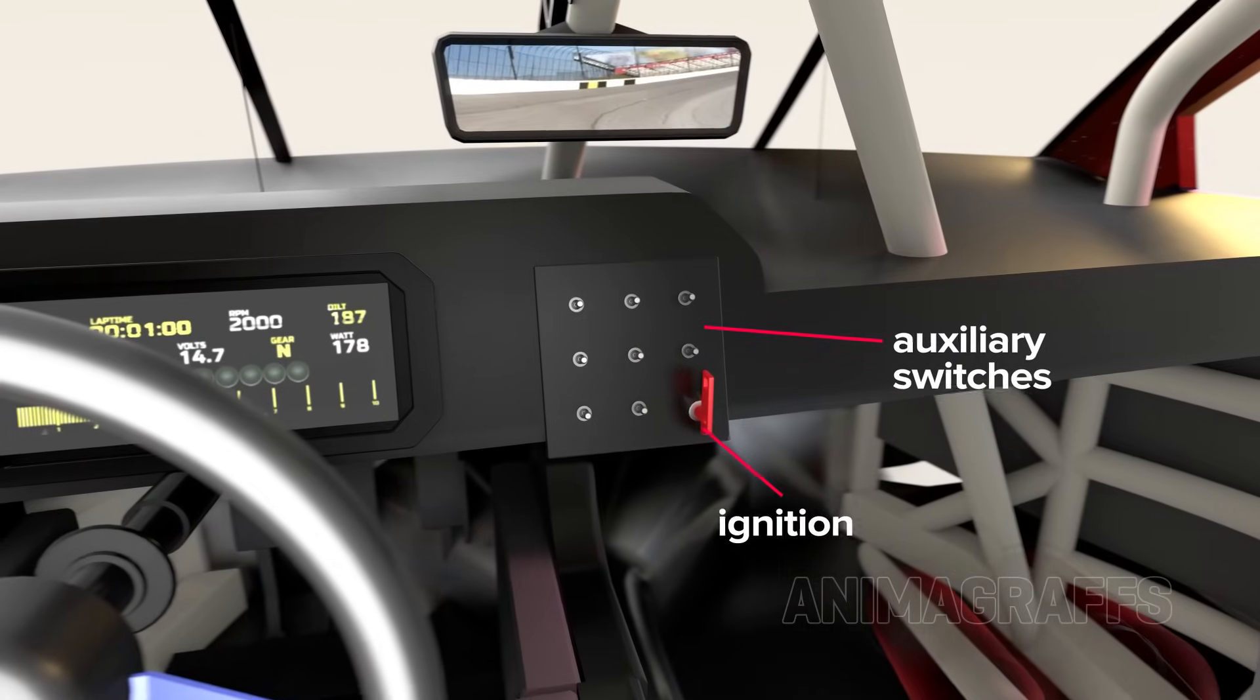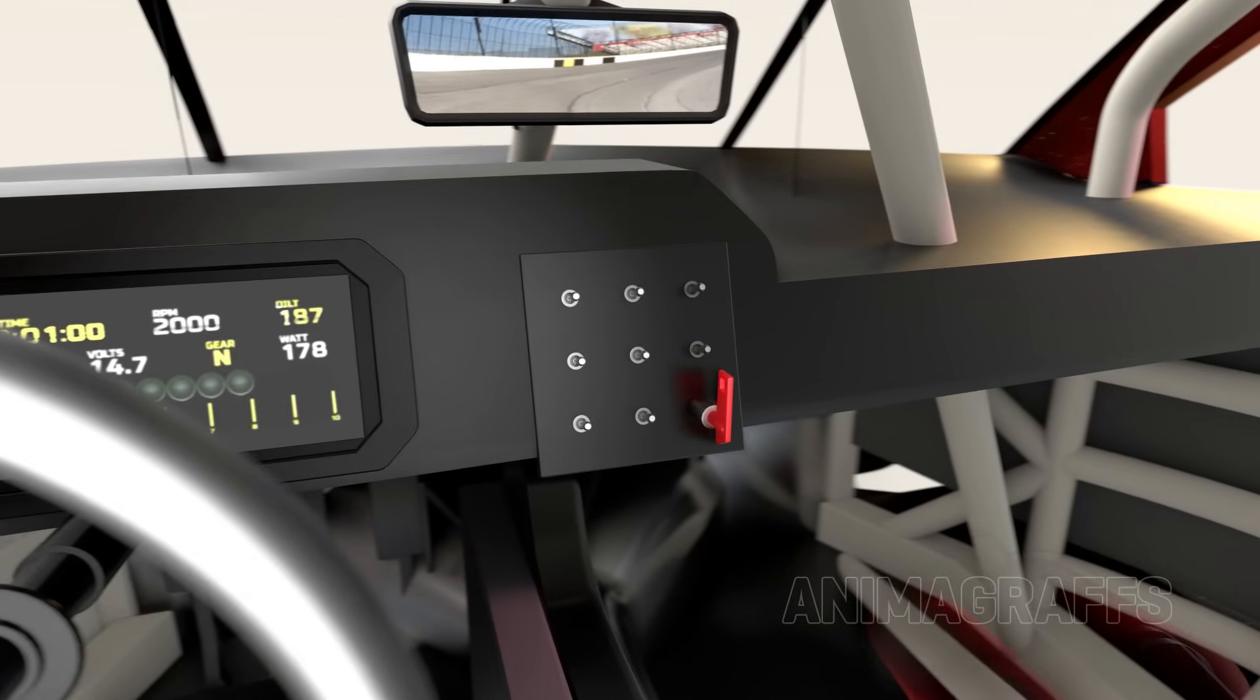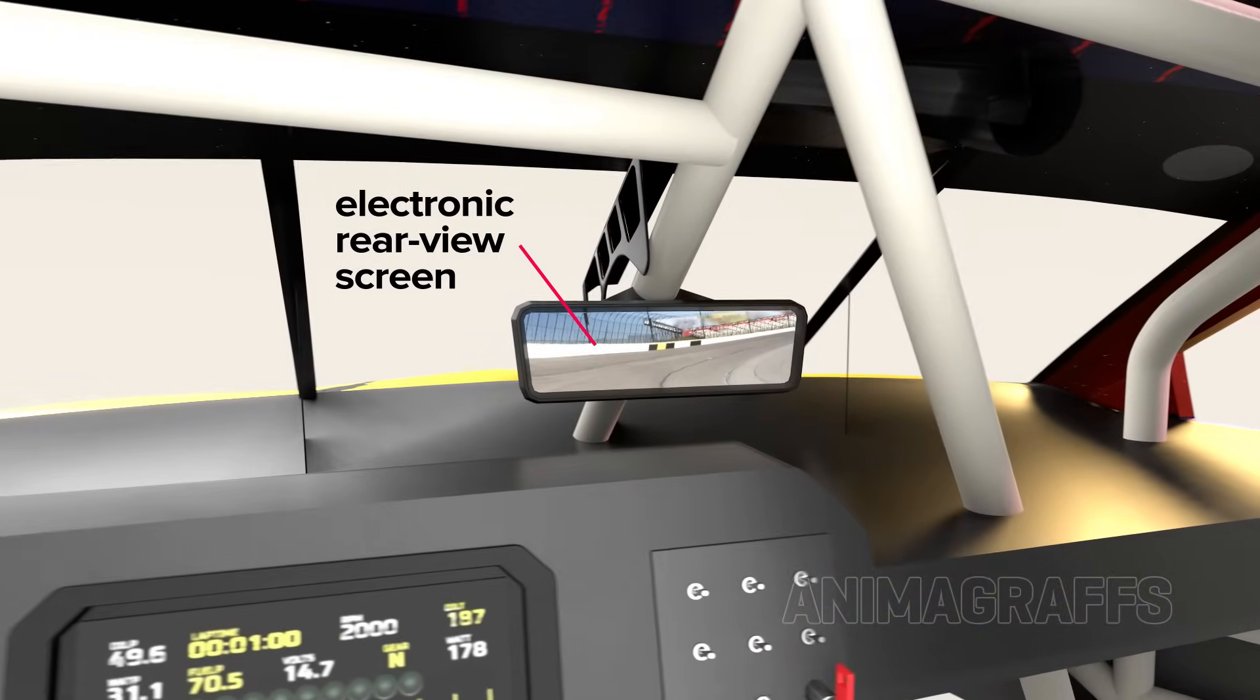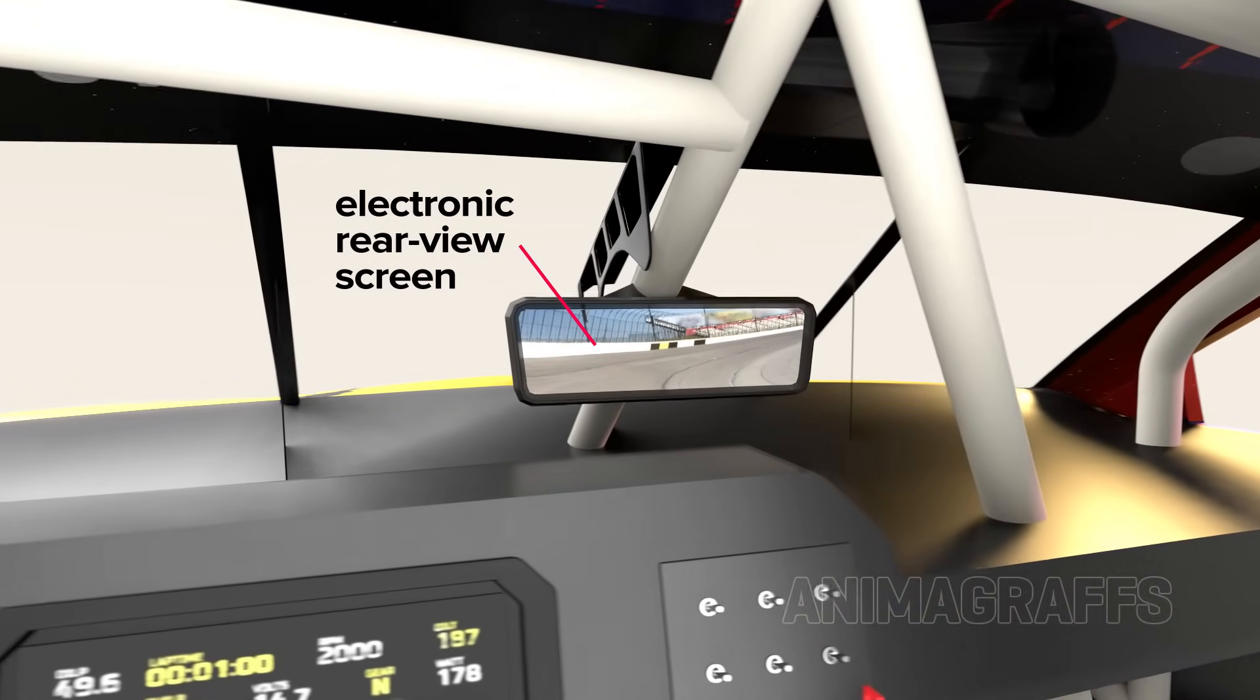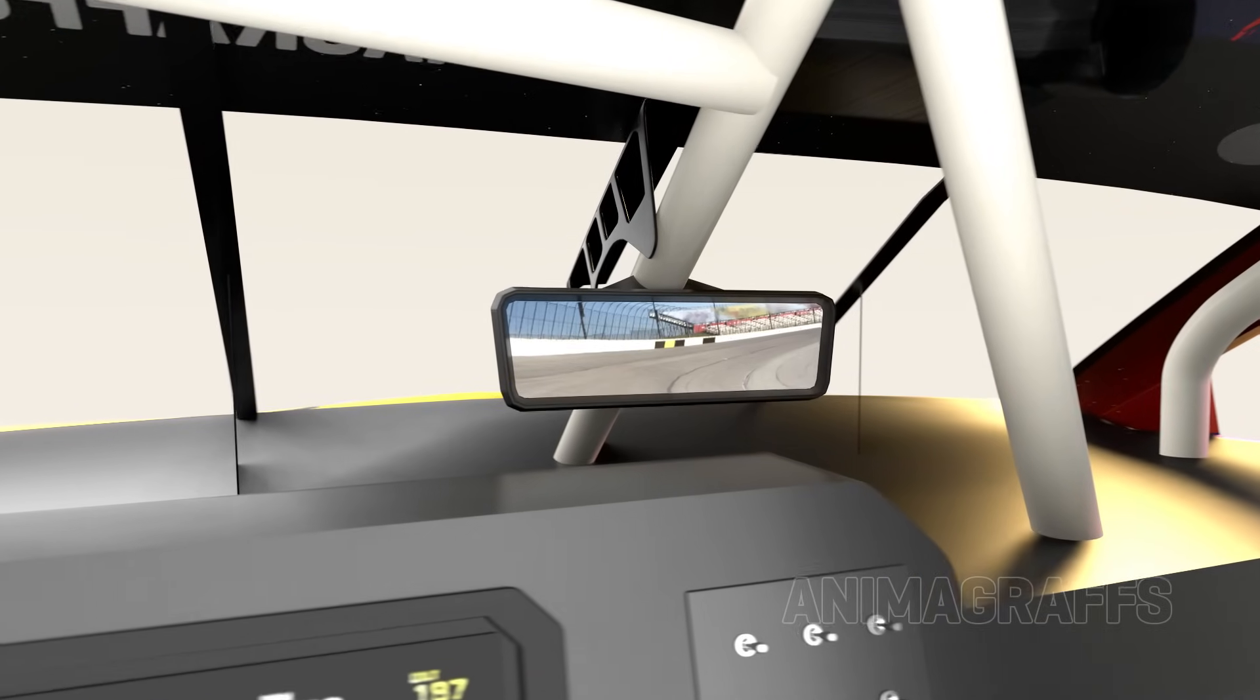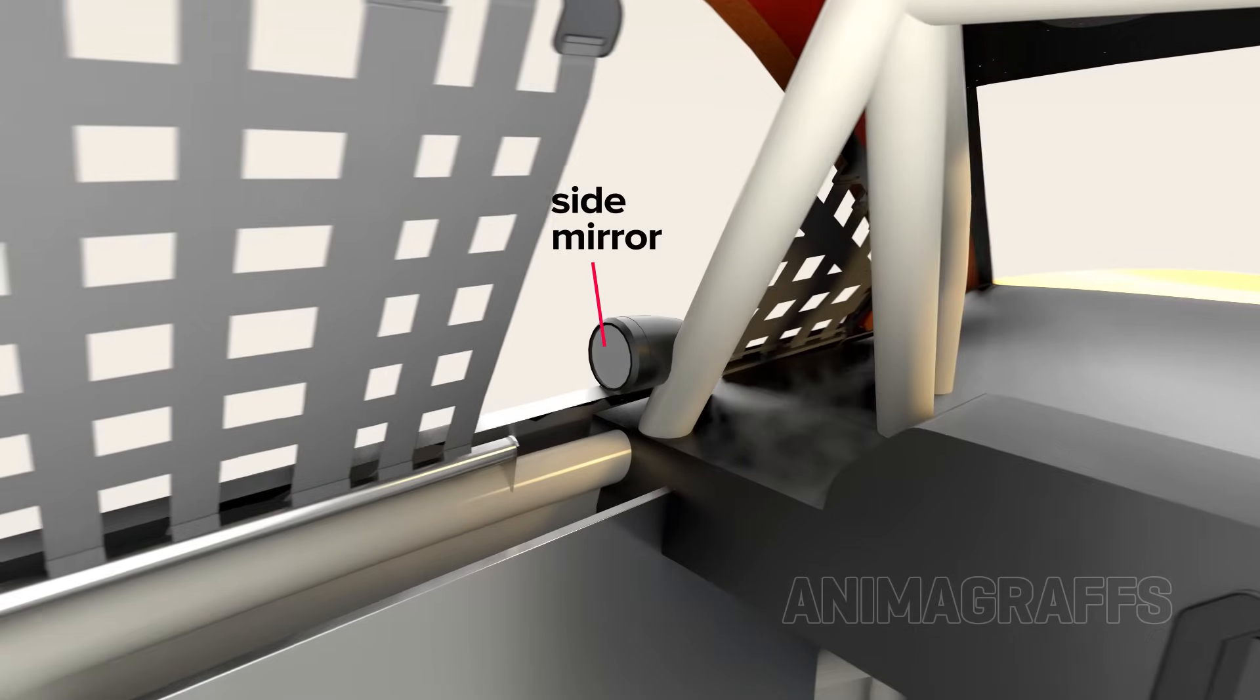Auxiliary switches vary between teams, but can include things like ignition, helmet or body air conditioning, or a switch for the three-quarter gallon reserve tank. An electronic rear view screen is connected to a camera on top of the car, to give drivers an unobstructed rear view. The small driver's side mirror is not allowed to extend outside of the car.